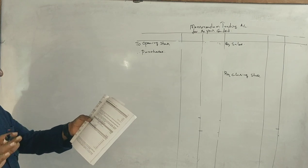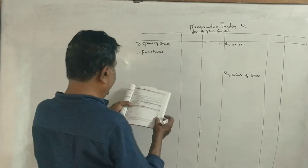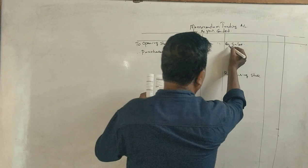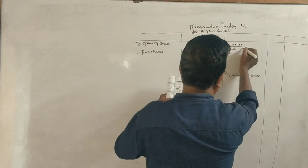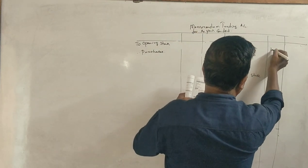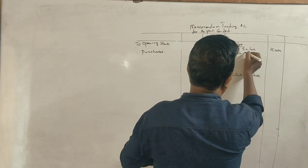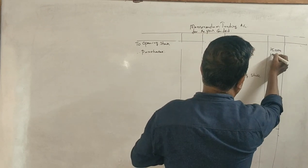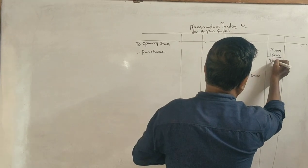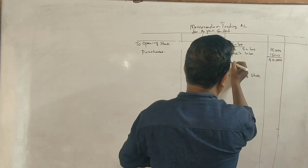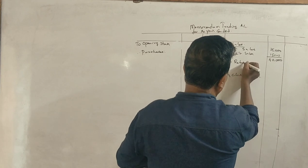So cash sales $25,000, credit sales $15,000, total is $40,000. Returns inwards $10,000, so net sales is $30,000.